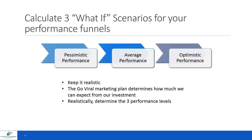Basically, we calculate three what-if scenarios: a pessimistic one, an average — which is really what we expect — and then an optimistic performance. By putting those together, we want to keep it somewhat realistic. We want to make sure the Go Viral marketing plan really determines how much we're going to do. For example, if we have a market of $2 million and we're only spending $100,000, our penetration isn't going to be very high. We want to realistically determine these three performance levels.